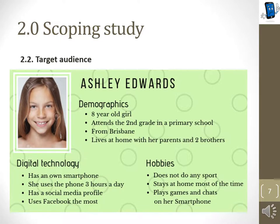The target audience of this intervention are primary school children aged 6 to 11. To have a better understanding, we created a customer persona. The target audience is presented by Ashley Edwards. She lives together with her parents in Brisbane and attends a primary school there. She has her own smartphone and a screen time of over three hours a day. Besides different social profiles, she uses Facebook the most. Consequently, she prefers to stay at home so she can use her smartphone instead of doing sport or meeting friends.